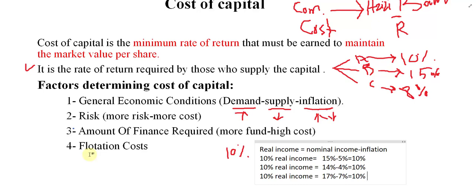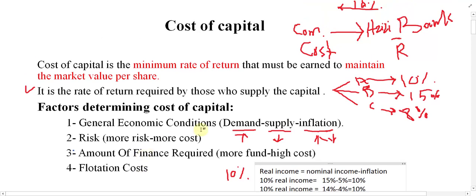The fourth factor is flotation cost — the cost of selling securities in the market. This includes documentation costs, brokerage fees, advertisement fees, commissions paid to brokers or underwriters when selling shares or bonds. If flotation cost is higher, cost of capital is higher; if lower, cost of capital is lower.